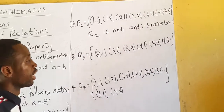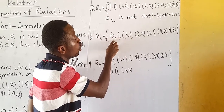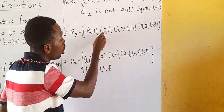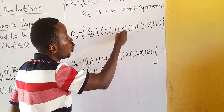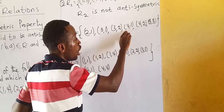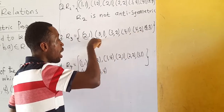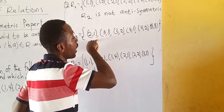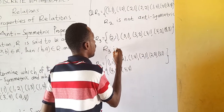Now let's look at R3. Flip (2,1) → (1,2); not a member, perfect — 1≠2. Flip (3,1) → (1,3); not a member, perfect. Flip (3,2) → (2,3); not a member, perfect — 3≠2. Flip (4,1) → (1,4); not a member, perfect — 4≠1. Flip (4,2) → (2,4); not a member, perfect. Flip (4,3) → (3,4); not a member — 4≠3. For all pairs, when flipped, the result is not a member, so R3 is anti-symmetric.